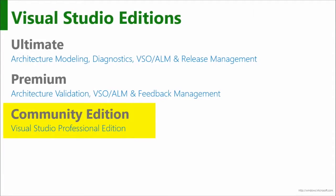Visual Studio comes in a handful of versions. The three primary versions are Ultimate, Premium, and Community Edition. Ultimate and Premium are often seen in enterprises and large development teams doing serious ALM work. With Ultimate, you can do architectural modeling and advanced diagnostics. Premium is for team members inside an enterprise, doing ALM feedback and interacting with stakeholders.